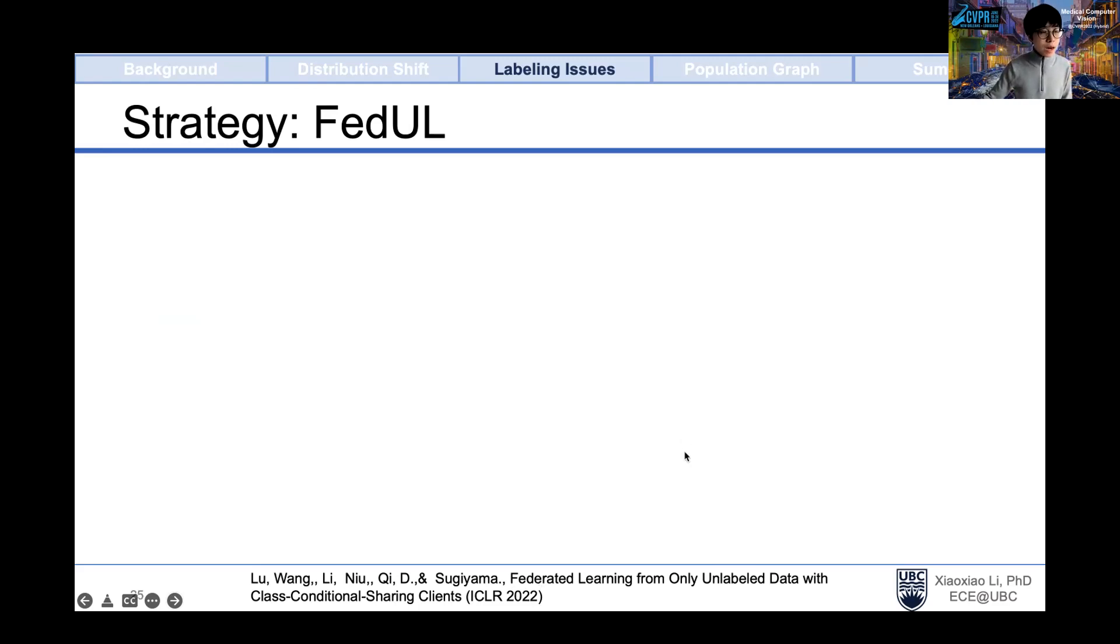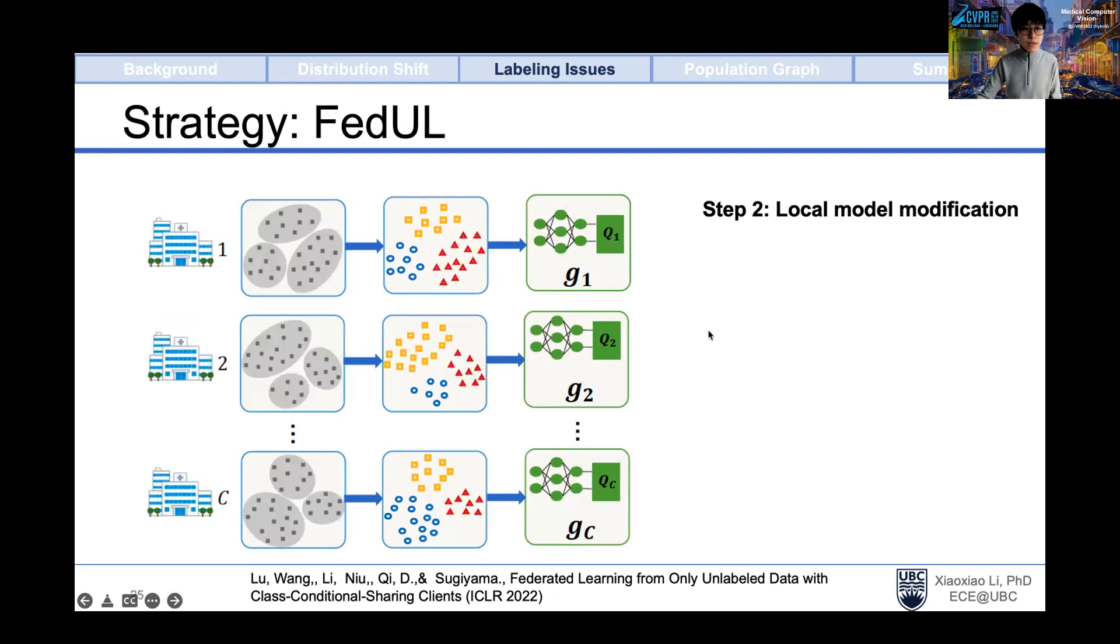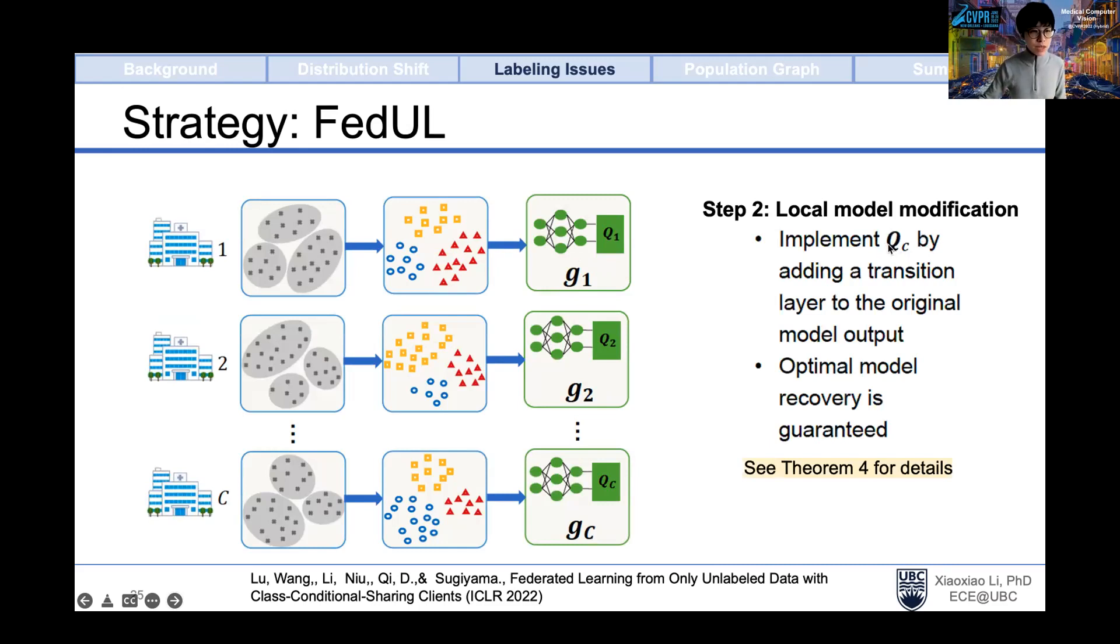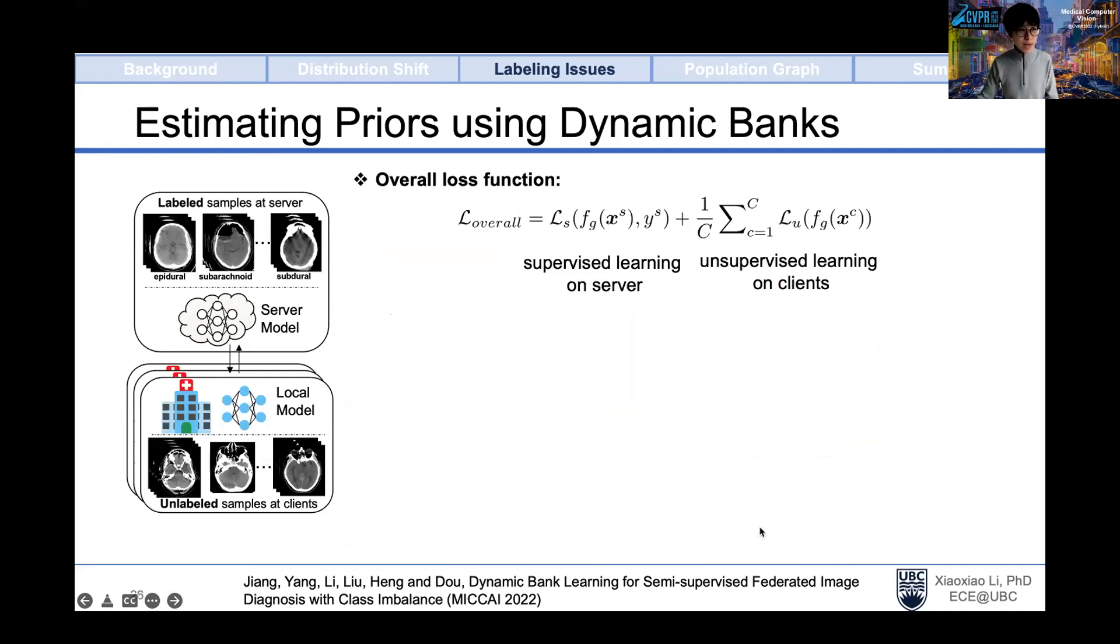Then the key question is how to infer our desired classifier from this surrogate task. To this end, we bridge the true class probability and the surrogate class probability by a linear transformation Q. The detail can be referred to our theorem one in our iCLEAR paper. Once we know this QC of each client C, empirically we only need to slightly modify the local model that fits into most federated learning schemes such as FedAverage. We implement this linear transformation layer QC by adding it to the output of each local model. Theoretically, we show the optimal model recovery is guaranteed from this surrogate task. Note that only the model within this red box are shared in federated learning, and the QC are calculated locally and can be different across different clients. The QC is calculated from the class prior pi C. However, the class prior is usually unknown.